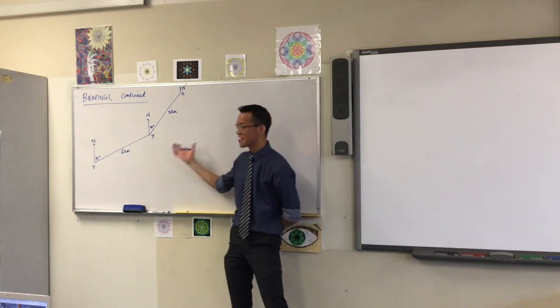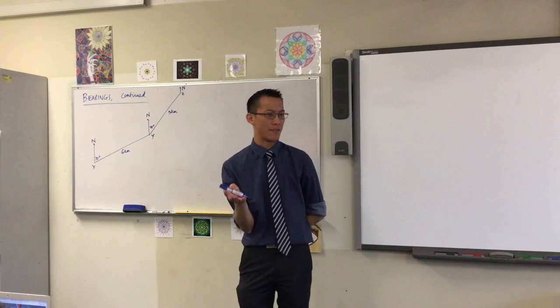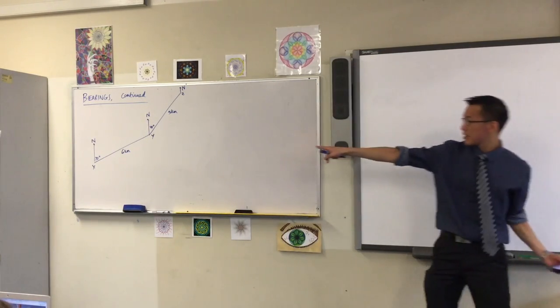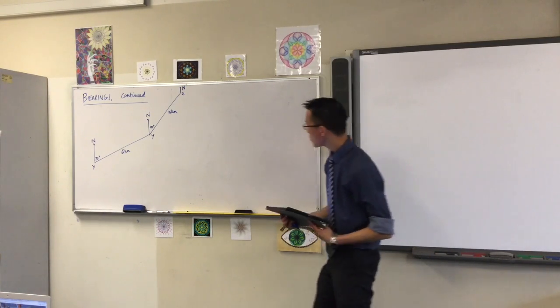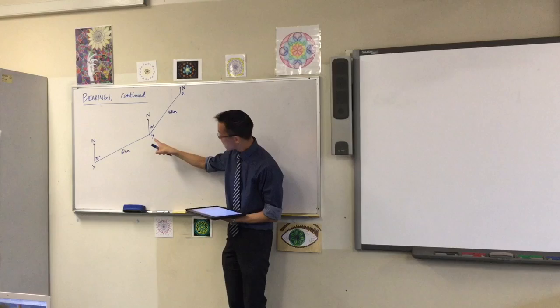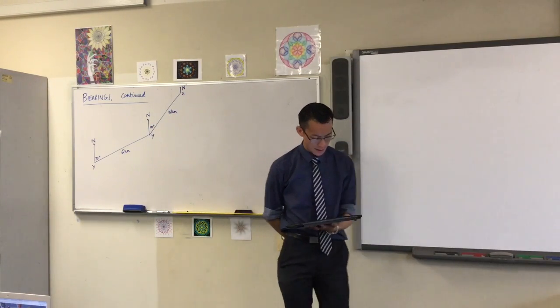You can see that this is just another way of stating the words they've given you to explain where they've been going. So this person, this hiker, has started at X in our bottom left-hand corner. They've walked this 6km distance on that bearing, and then this 5km distance on this bearing, and here at Z is where they end up.